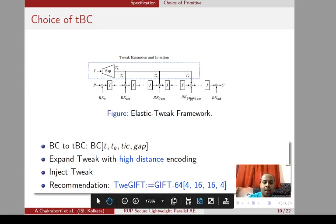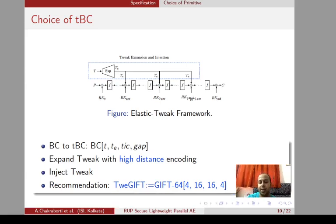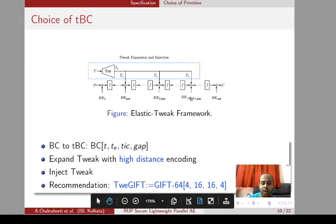The tweakable block cipher we use takes the well-known GIFT-64 block cipher, uses a 4-bit tweak, expands it to a 16-bit tweak using a high-distance encoding, and then injects the 16-bit tweak after every 4 rounds. In GIFT-64, we have 16 four-bit nibbles in the state, so we inject 1 bit of the expanded tweak to each of the 16 four-bit nibbles, giving a total of 16 bits in the expanded tweak.